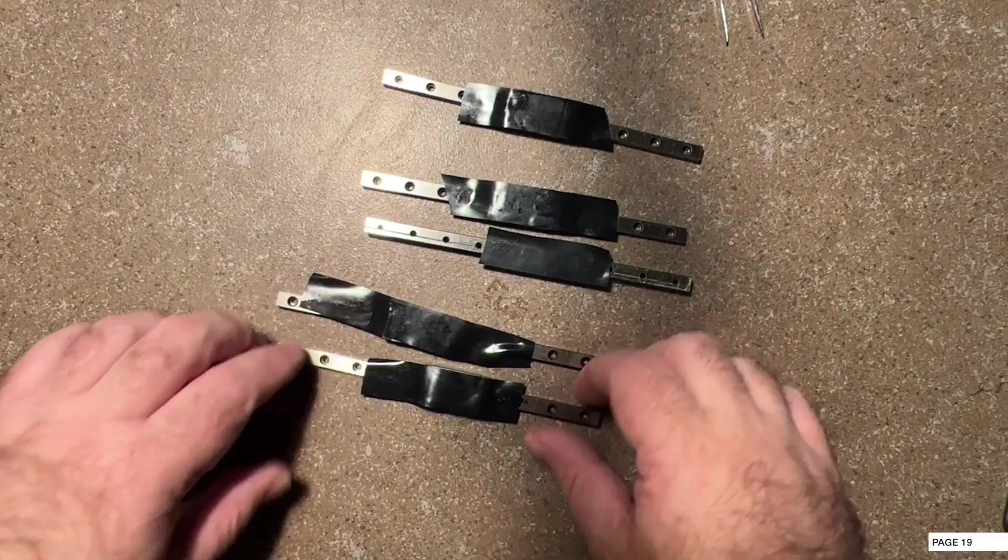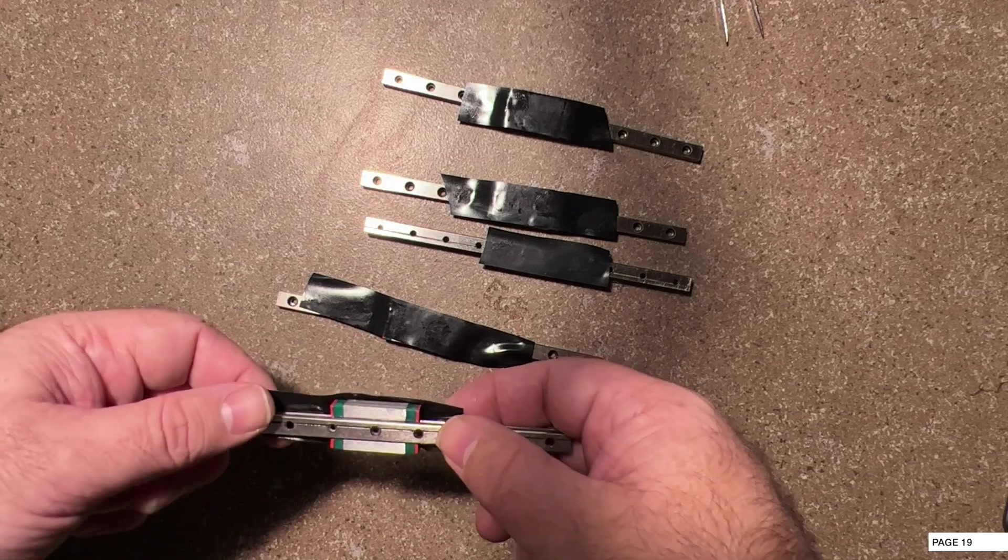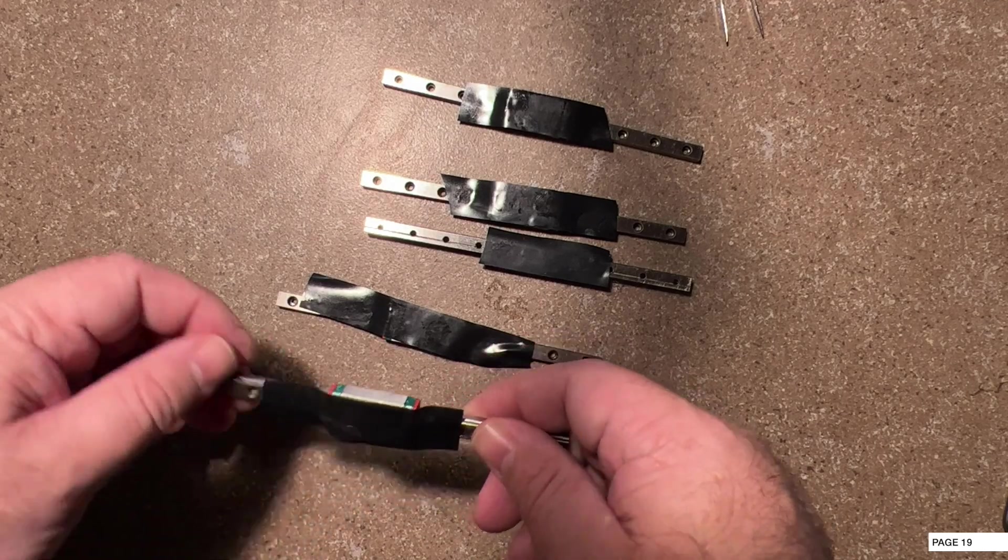Now we've got our rails out. I've actually got some black tape over mine and I've already prepped them. I'll show a quick little video on how I do that.